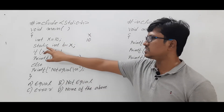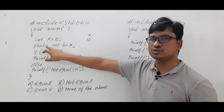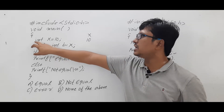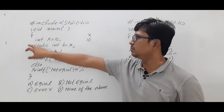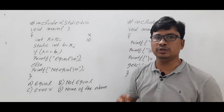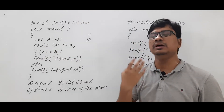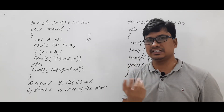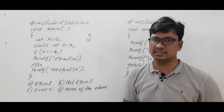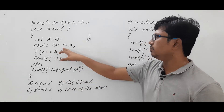The 'static' keyword defines the scope, lifetime, and memory location of a variable. You might ask what the scope of this variable is — it is a static variable. We have four types of variables: automatic, static, register, and external. All these concepts have been discussed in the C programming lectures, which you can refer to.